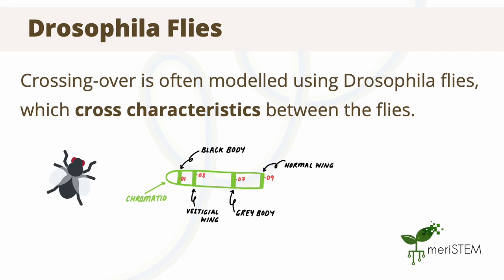This process is commonly modelled using drosophila flies, as there are many varieties of these flies, each with different observable characteristics. Crossing over allows new combinations of these characteristics. For instance, the black body and vestigial wing traits are normally inherited together as they are on the same chromosome. However, crossing over allows them to be passed on separately in some cases.